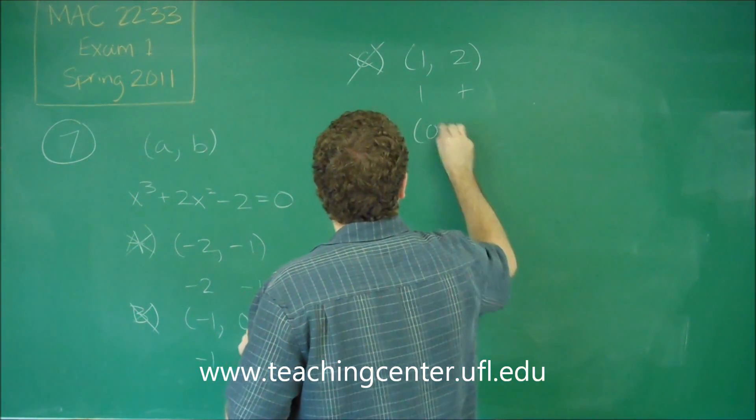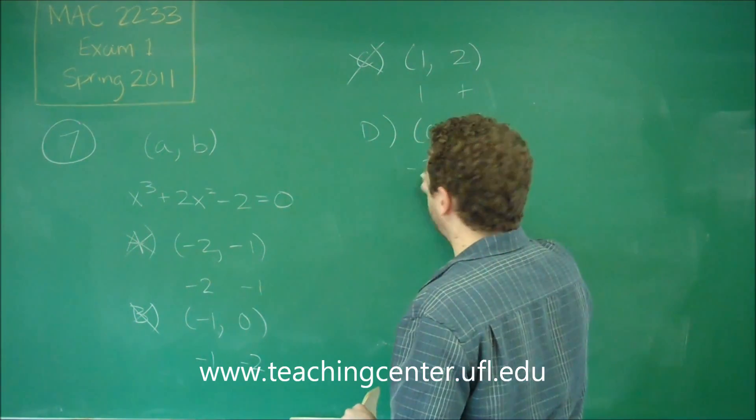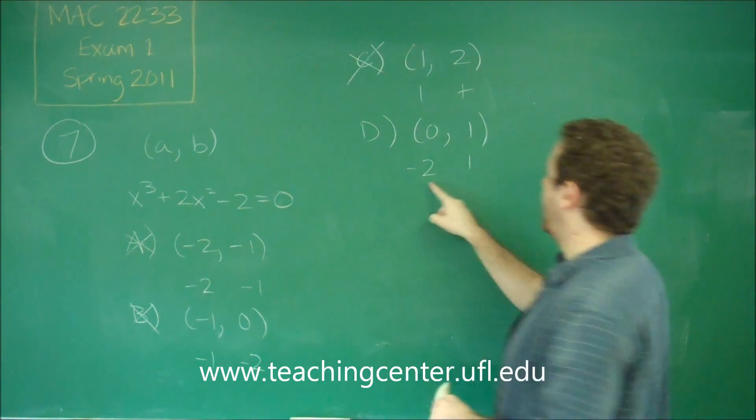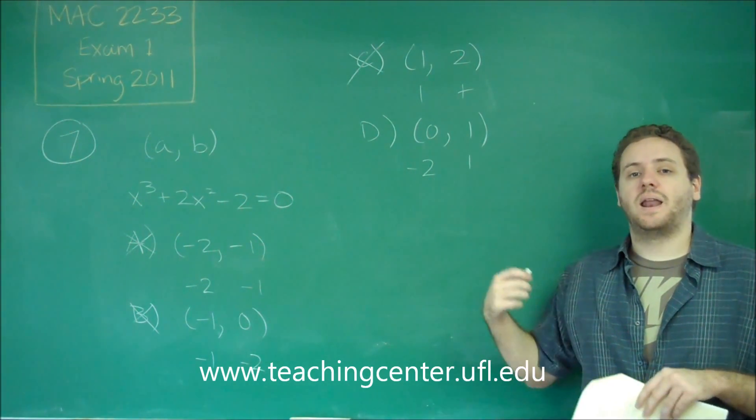For D, we have zero to one. We've already done both of these. When we did zero, we got negative two. When we did one, we got one. Now we have a negative and a positive answer, which means somewhere in between there, it has to be zero.